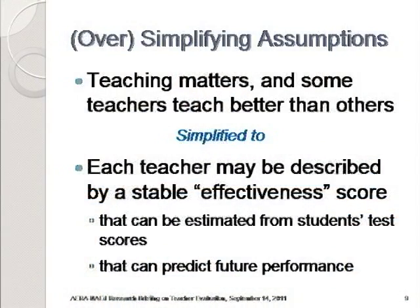I'm going to start with just a couple of assumptions. As with all kinds of models, there's a lot of truth in where we start — the problem is just pushing some of these obvious truths a little too far. First, we can all agree that some teachers are better than others. But that's not the same as saying that each teacher can be described by a single number that captures his or her effectiveness year after year with one classroom pool of students after another, and that can be estimated from students' test scores and used to predict future performance accurately.